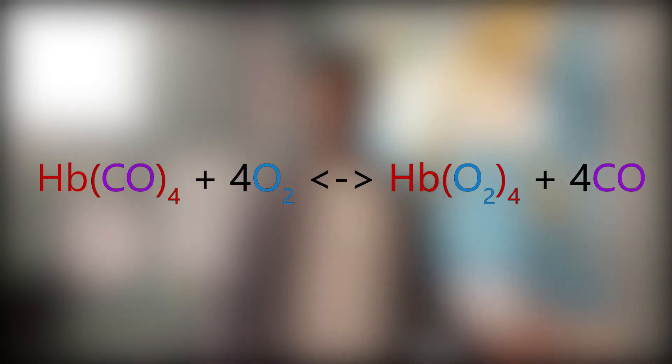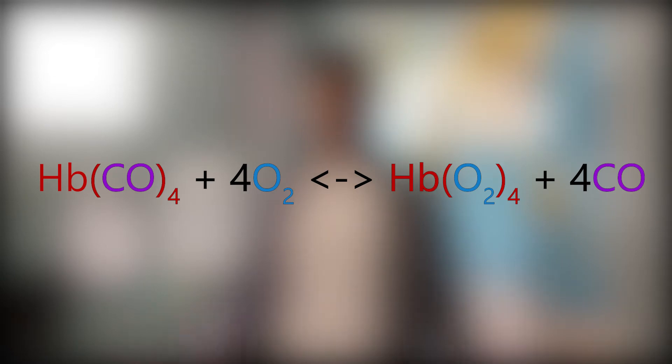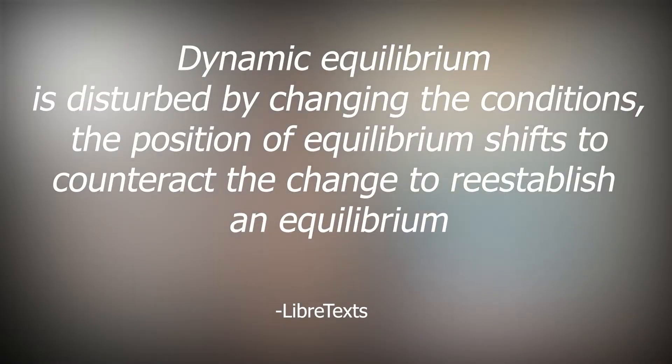The equilibrium equation here is extremely important to understanding how everything works. Carbon monoxide and oxygen bond onto the hemoglobin protein, represented by Hb in this chemical equation. We see that oxygen and carbon monoxide displace each other, so in this equilibrium, if the concentration of carbon monoxide increases, this shifts the entire reaction to the left — resulting in more hemoglobin being bonded with carbon monoxide molecules. This concept ties directly into Le Chatelier's principle, which states that when dynamic equilibrium is disturbed by changing conditions, the position of equilibrium shifts to counteract the change and re-establish equilibrium.